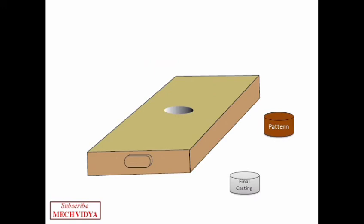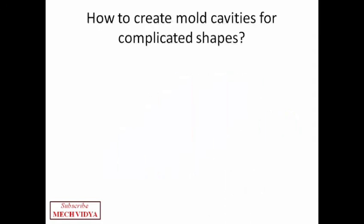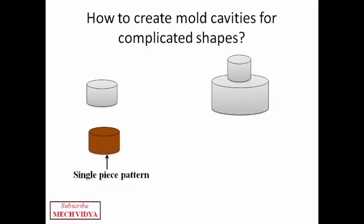Now one difficulty arises during the casting of complicated objects. Now what is the difficulty? Suppose we want to create a very simple product such as this, so all we need is a simple pattern that replicates this shape. Now this kind of simple patterns are called single piece patterns. Now the problem arises when we have to create a more complicated shape such as this, as a single piece pattern cannot create the cavity of this shape. It is because while pulling it out of the sand, the mold will break.